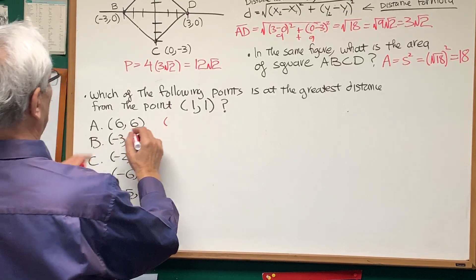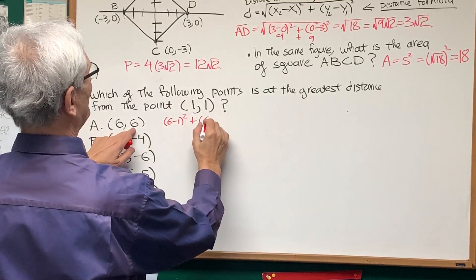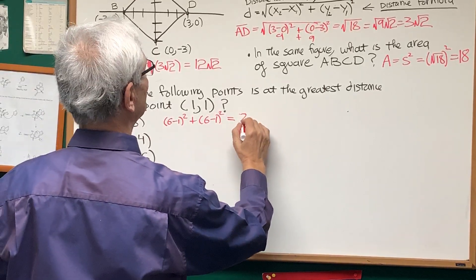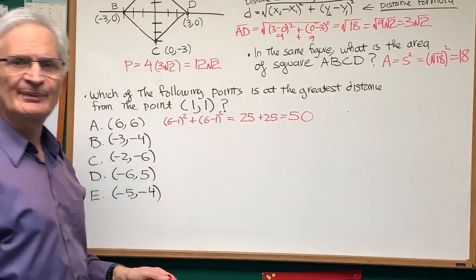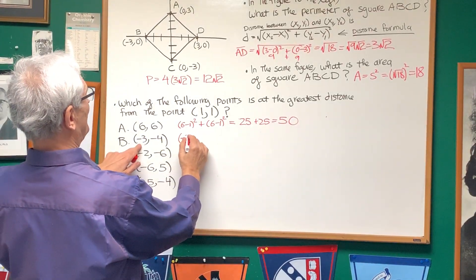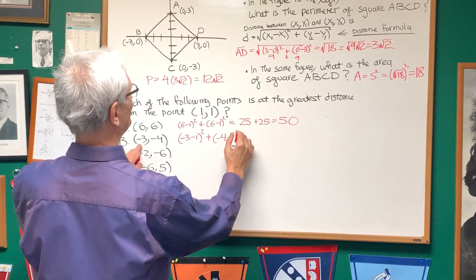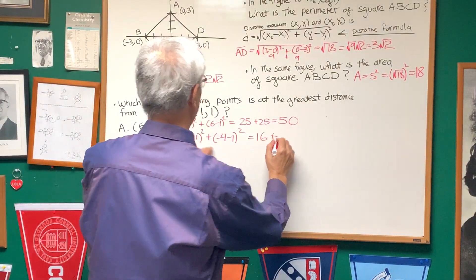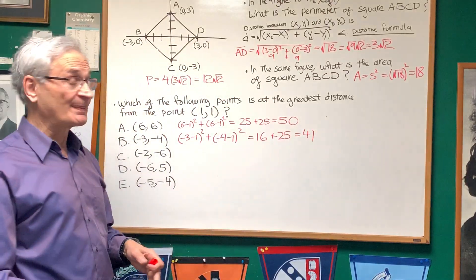So let's look at this. The distance formula will give us the difference in the x values, 6 minus 1 squared, plus the difference in the y values, 6 minus 1 squared. So that's 5 squared plus 5 squared, 25 plus 25, and that's equal to 50. And we can move at a more efficient rate here. Let's do the same thing for the second one: negative 3 minus 1 squared plus negative 4 minus 1 squared. This is negative 4 squared, which is 16, and negative 5 squared, which is 25, and this gives us 41.